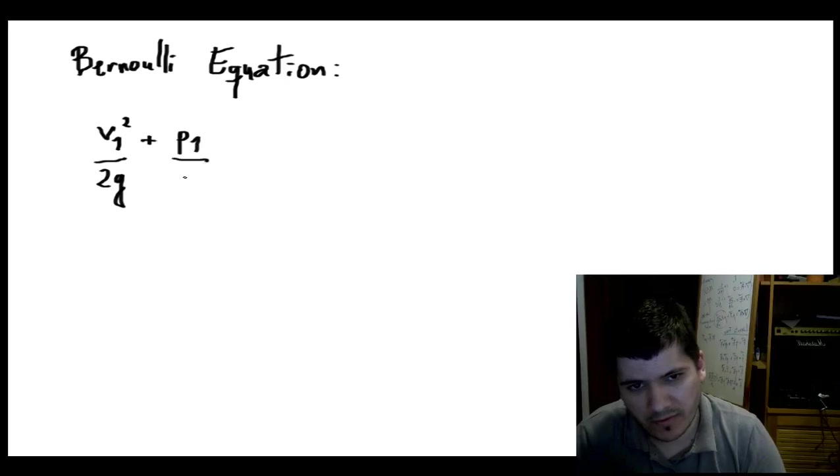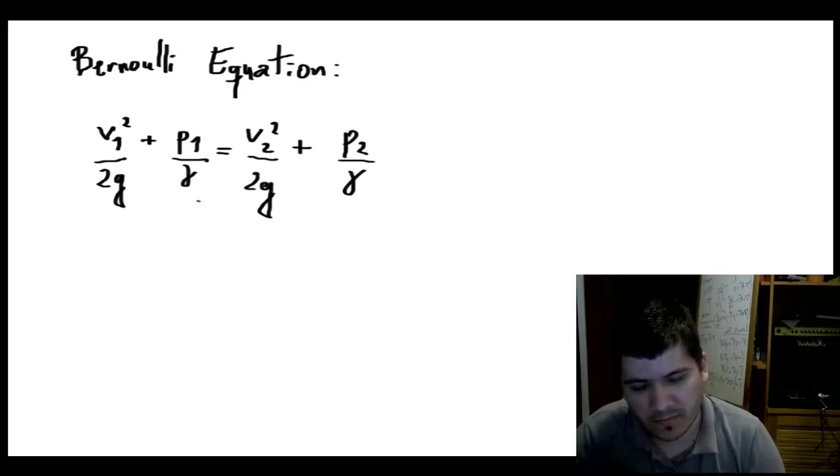Here we have pressure divided by the specific weight of the fluid. Here it's 1, 1, 1, and on the right-hand side it's going to be 2. We can multiply all this by the gravity acceleration to get rid of it.